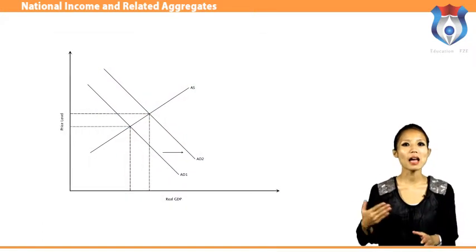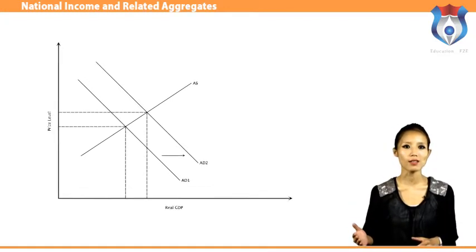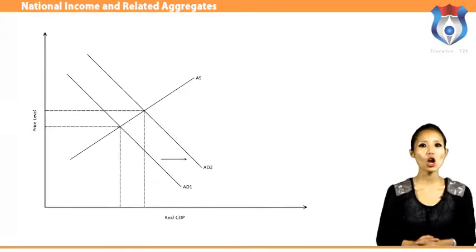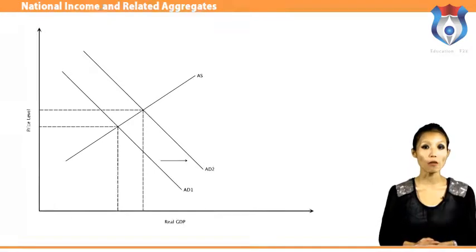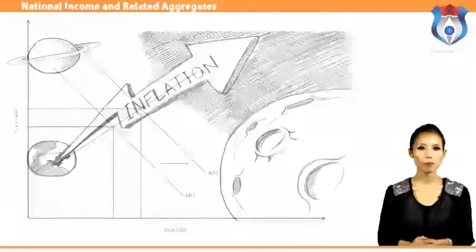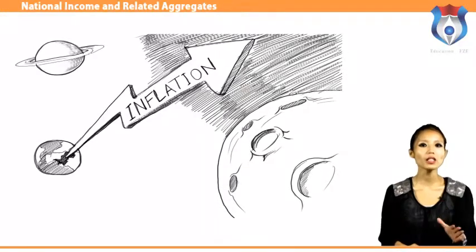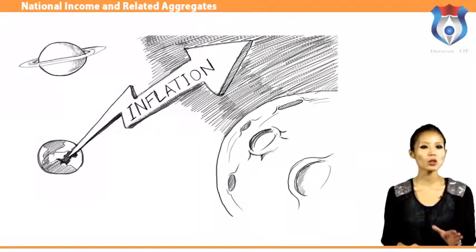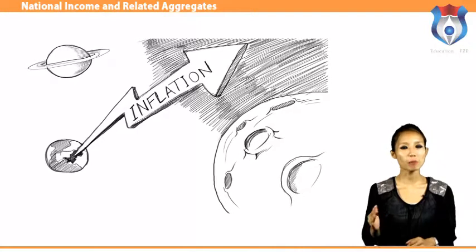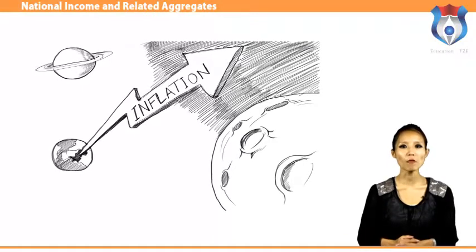When aggregate demand rises faster than aggregate supply, inflation rises. Lagging aggregate demand meanwhile may be a sign of an economic recession. Economists often differ on the proper role of government in promoting stable prices, economic growth, and low levels of unemployment. The index of leading economic indicators, calculated by the Conference Board — a non-governmental organization — is an example of aggregate economic analysis. Its components include average working hours, manufacturers' orders for goods, and building permits for residential and commercial buildings.